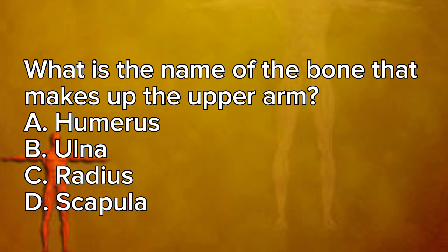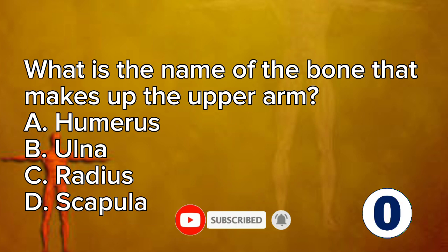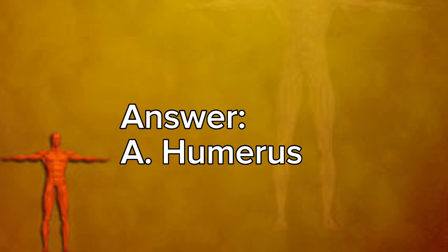What is the name of the bone that makes up the upper arm? A. Humerus. B. Ulna. C. Radius. D. Scapula. Answer: A. Humerus.